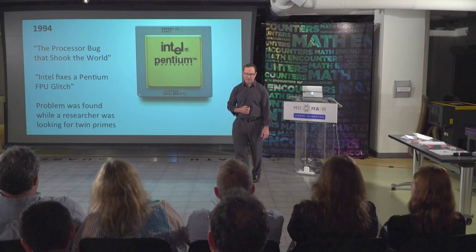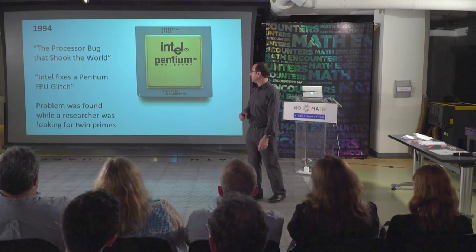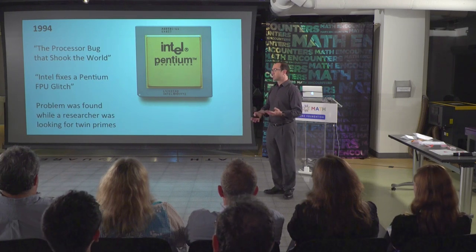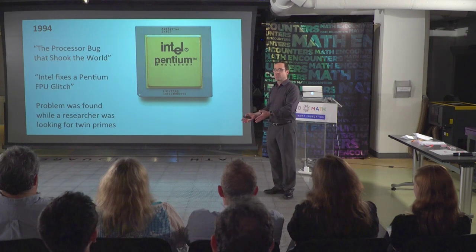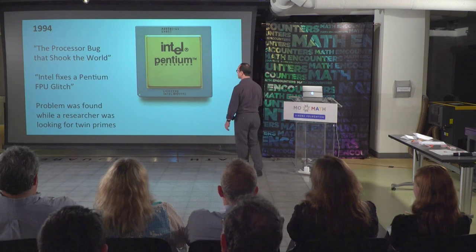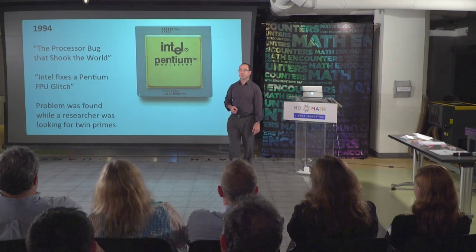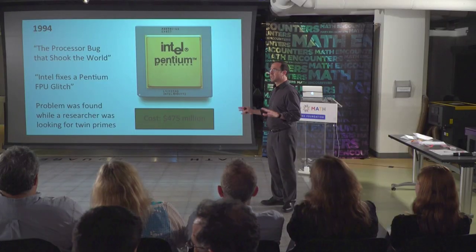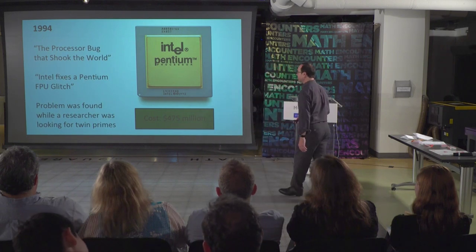There is a website where people have been able to offer up their computer time — a distributed computer project that looks for twin primes. Here's a colossal twin prime which was found. Take this huge number, multiply it by this large power of two, and if you either add one or subtract one, you get a prime. Huge twin prime pair — over 200,000 digits long. And here's a curious instance where twin primes came out to be useful: in 1994, someone doing research on twin primes found a discrepancy, and what eventually turned up is there was a bug in an Intel chip. Intel coughed up a lot of money to get all these bad chips replaced.